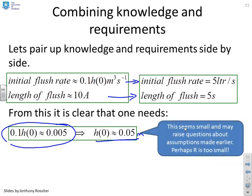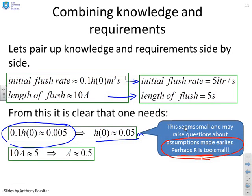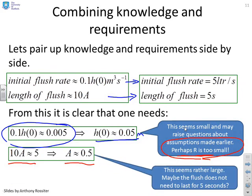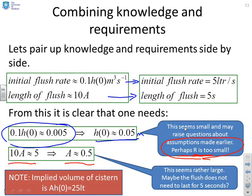And you might be saying, golly, that's a bit smaller than I expected. Normal systems are a lot deeper than 5 centimeters. And of course, that's going to make you ask questions. Have I made an incorrect assumption earlier? Because the answer I've got here isn't what I expected. The likelihood is you'll come up with a conclusion. Perhaps r was too small, which is one of the things that we indicated. OK, if we look at the length of the flush, we get 10a approximately 5, which gives you a approximately 0.5. And again, you might say this seems rather large. Maybe the flush doesn't need to last for five seconds. Well, in fact, if you change r, you may find that the answer you get here changes as well. Now, just to have interest, the implied volume of the system is AH0, which is about 25 liters. And you might be saying, well, actually, that doesn't sound too far away from what I would expect.